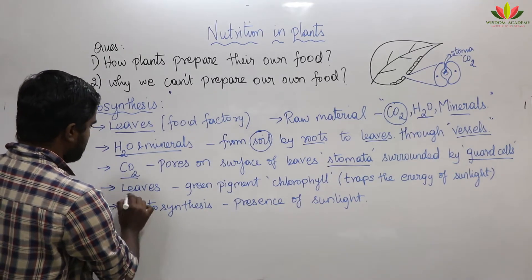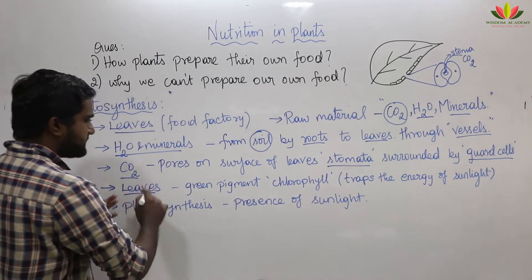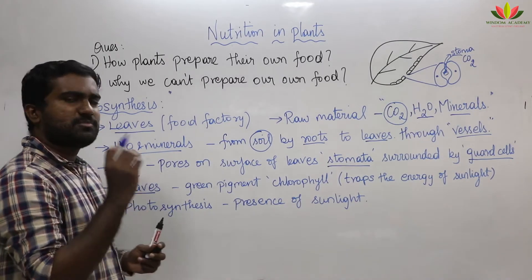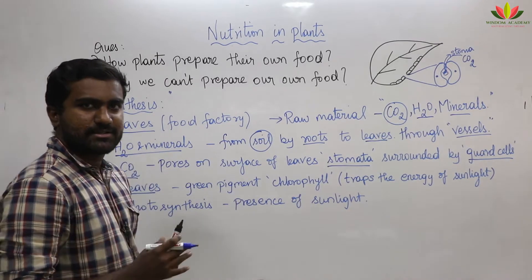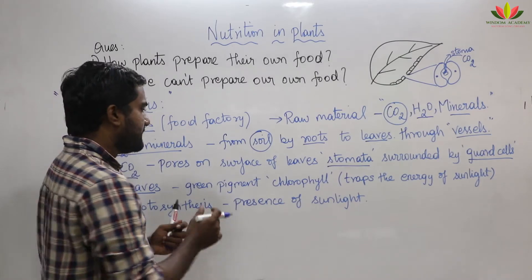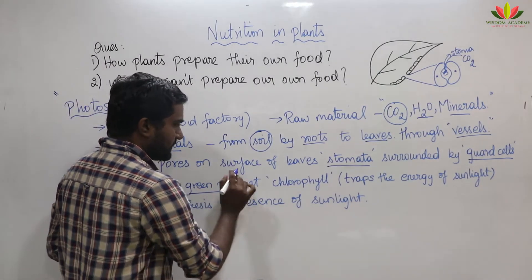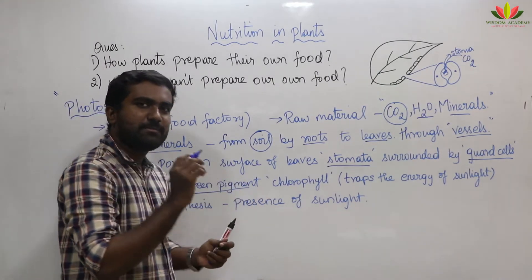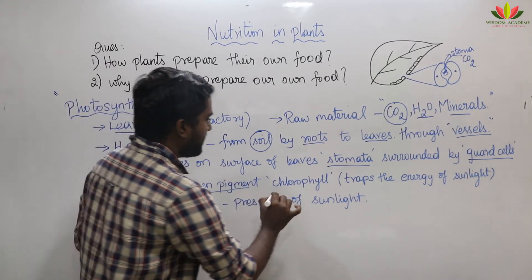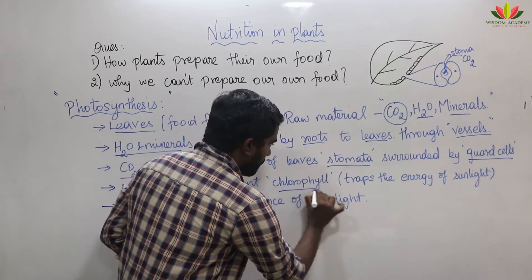The leaves are responsible for photosynthesis. In the leaves there is a special pigment. This pigment is green in color, and we call it chlorophyll.